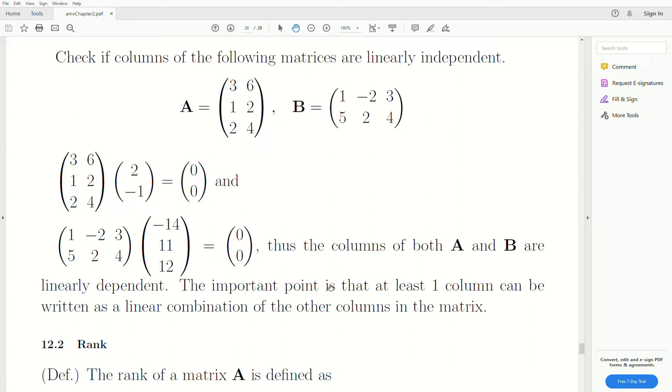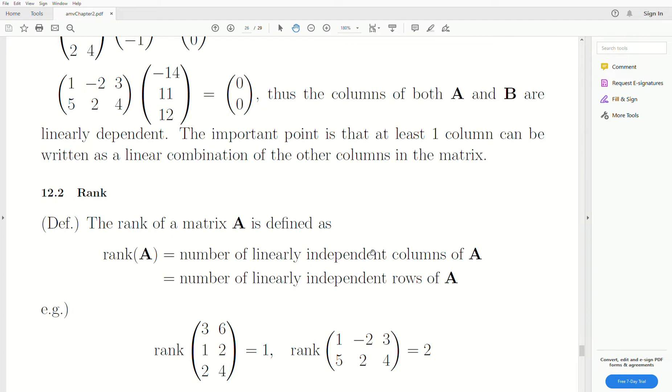Okay, so the columns of both A and B are linearly dependent. Now really, the important part of this is that at least one column in these matrices can be written as a linear combination of the other columns in the matrix. That is the absolute critical point here.